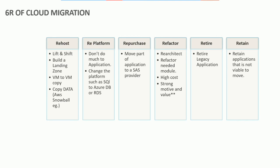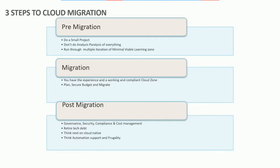Retire means you identify legacy applications that are no longer needed and can be decommissioned. Retain means that some workloads — due to hardware requirements, data security, or regulatory requirements — cannot be moved to the cloud yet, so you keep them running in your on-premises data center.